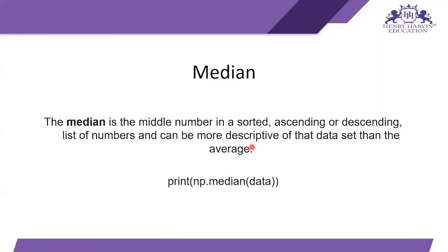The median is the middle number in a sorted ascending or descending list of numbers, and can be more descriptive of a dataset than the average. When we arrange the data in ascending or descending order, the median is the middle number. We calculate it using: print(np.median(data)).